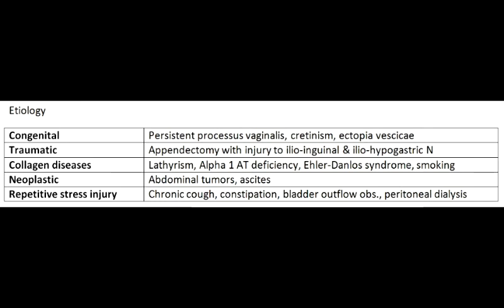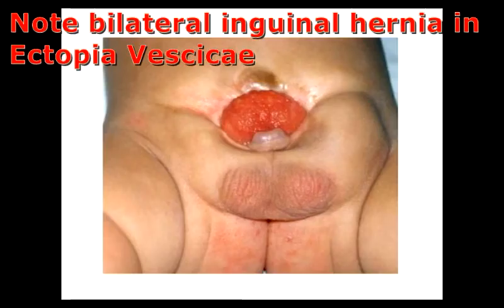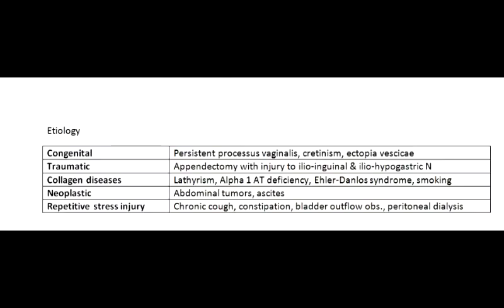Remember that once herniation occurs, this dynamicity is lost and the tissues get weaker. To understand the etiology of hernia, the various causes could be congenital such as cretinism and ectopia vesicae, also a persistent processus vaginalis. Traumatic causes include injury to the ilioinguinal and iliohypogastric nerve during appendectomy — one can avoid this by not going below the anterior superior iliac spine in the exposure.